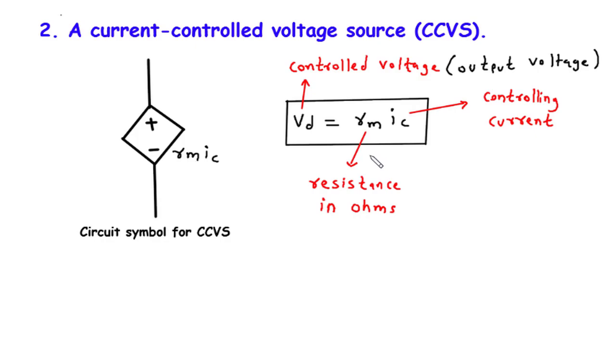Essentially, the CCVS equation states that the voltage across the CCVS is equal to the product of the resistance RM and the controlling current IC. In other words, as the controlling current varies, the voltage across the CCVS will change proportionally.